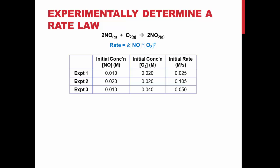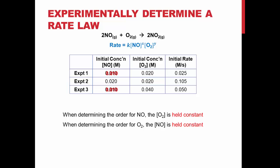Let's see how we would experimentally determine a rate law. The example we will use is the formation of nitrogen dioxide from nitrogen oxide and oxygen. Our rate law is: rate equals K times the concentration of NO to some exponent X, times the concentration of O₂ to some exponent Y. To determine this, we run at least three experiments. In experiment 1, we set a concentration for NO and O₂. In experiment 2, we double NO but leave O₂ constant. In experiment 3, we leave NO at the original concentration and double O₂. To find the order for NO, we keep O₂ constant and compare experiments 1 and 2. To find the order for O₂, we keep NO constant and compare experiments 1 and 3.